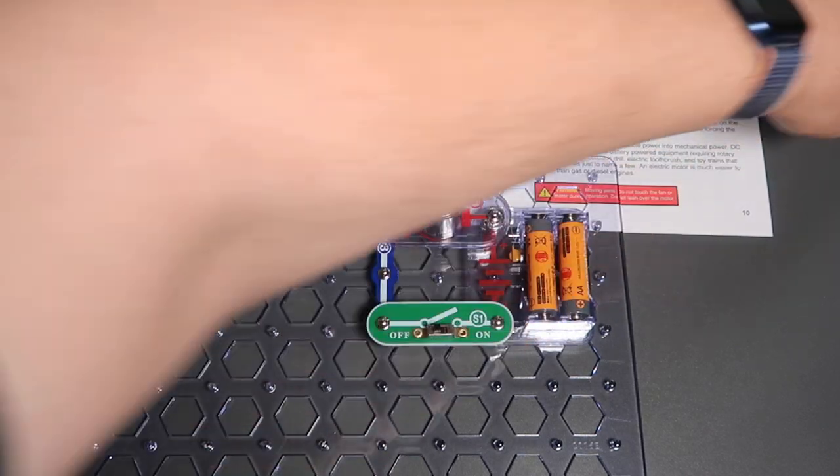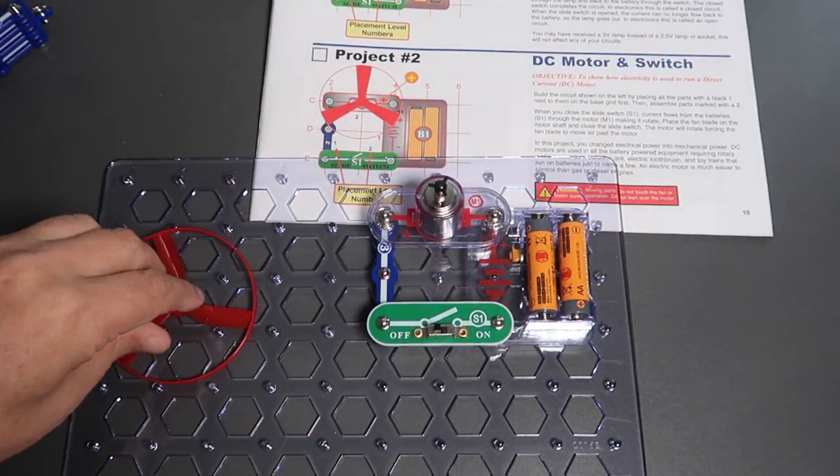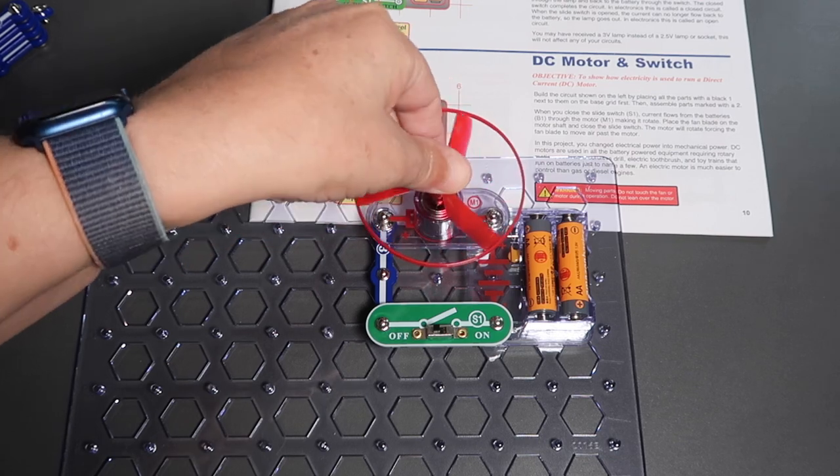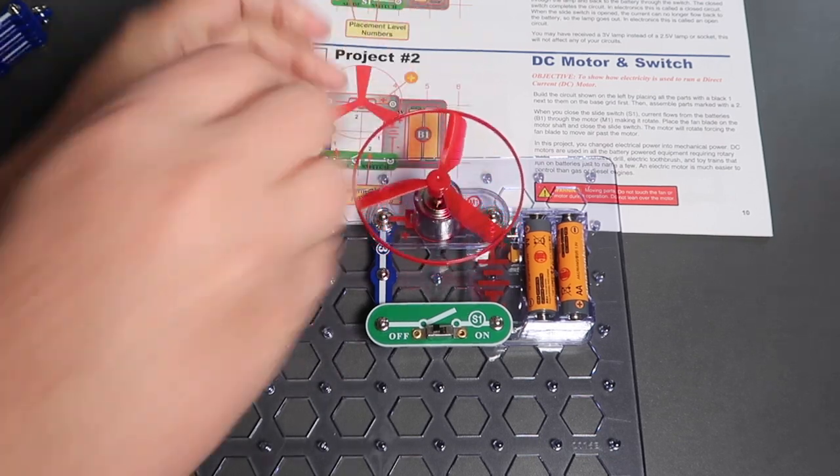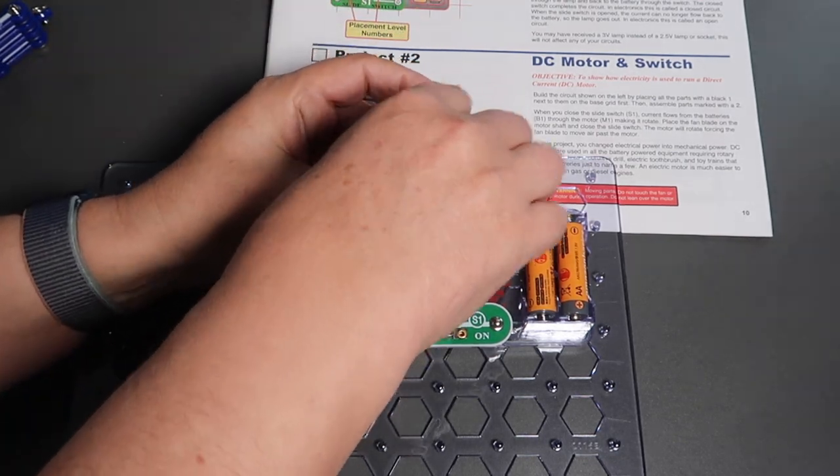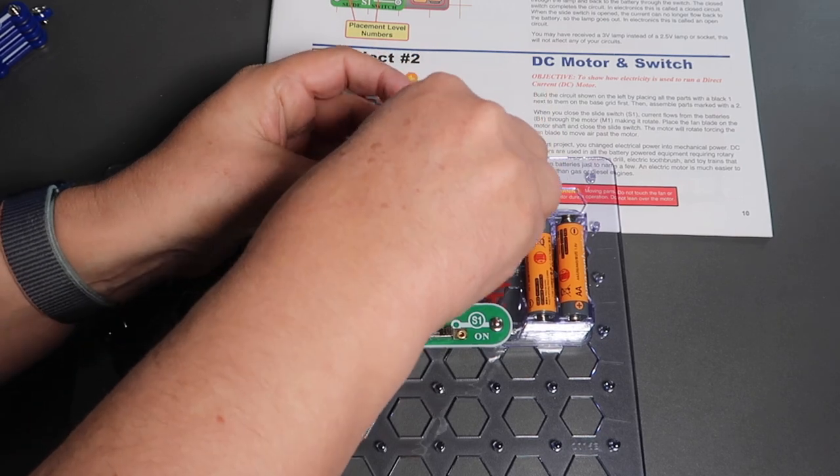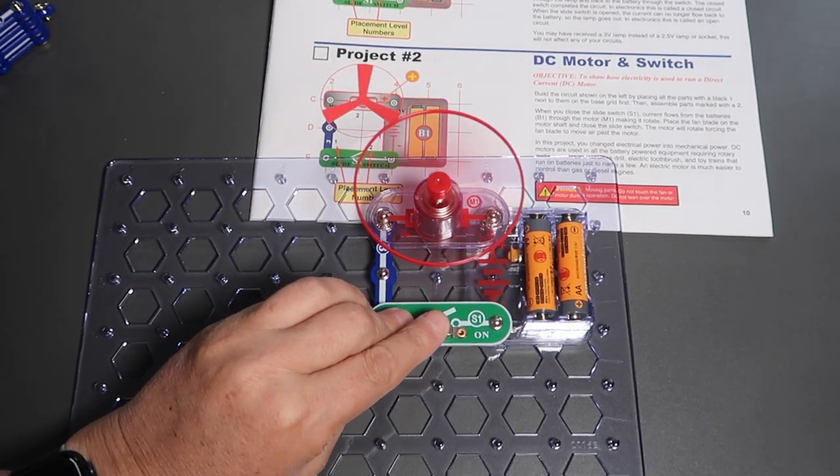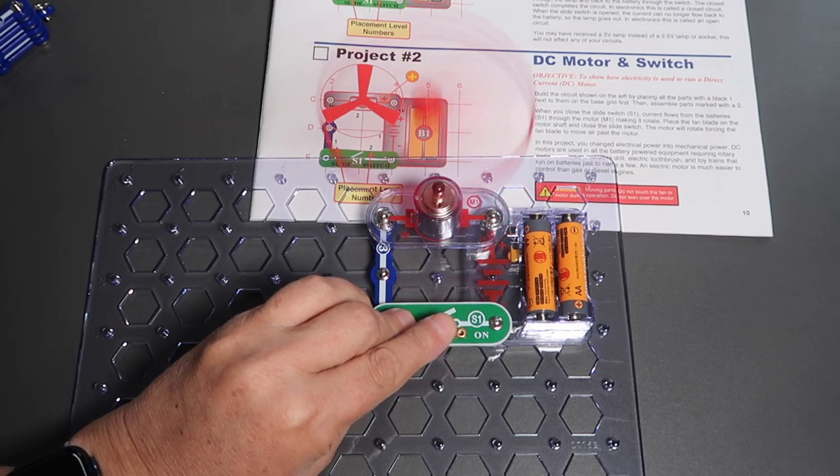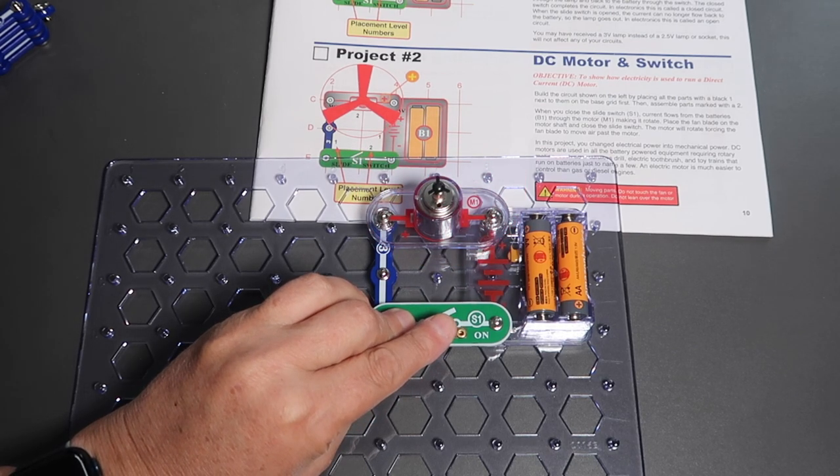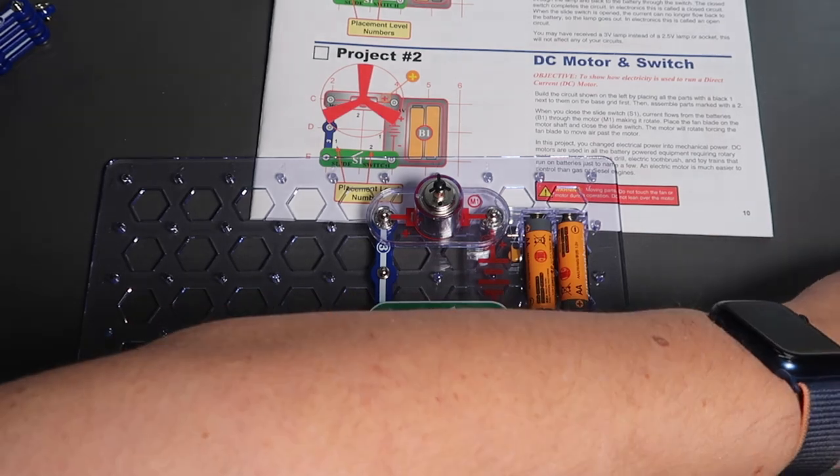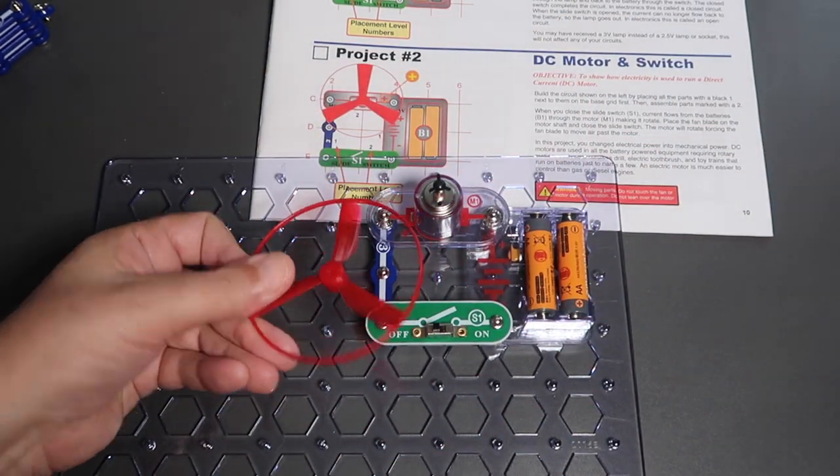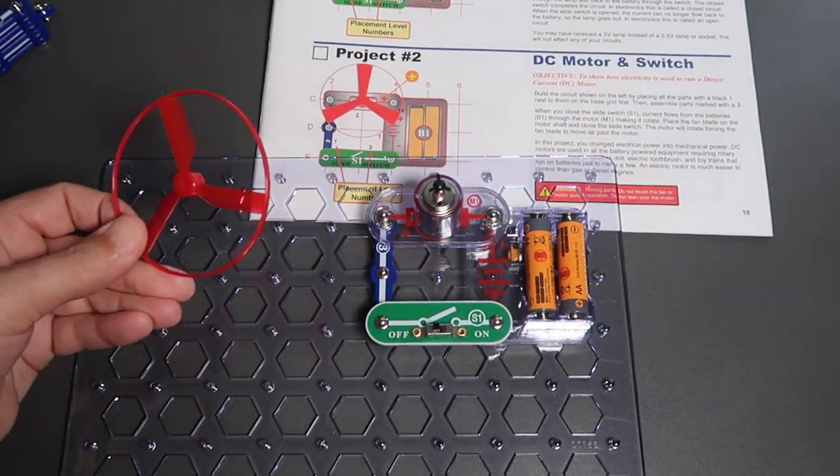And in fact, if you stop it suddenly, it appears to want to take flight. Maybe there's a way you can actually click this on. Not sure. Let's do that again. On. Nope. It likes taking flight. Which is fun in itself. So that's project two, DC motor and switch.